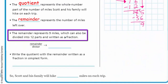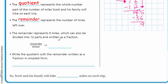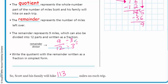The remainder represents 9 miles, which can also be divided into 12 parts and written as a fraction. Since we were dividing by 12, we put 9 over 12. Now it says to write the quotient with the remainder in simplest form. Scott and his family will hike 113 miles. I see a common factor of 3, so 9/12 simplifies to 3/4. So they'll hike 113 and 3/4 miles on each trip.